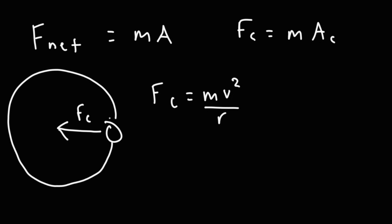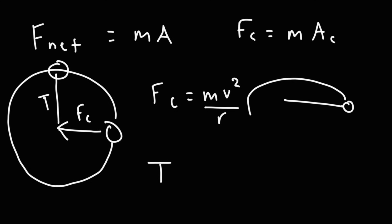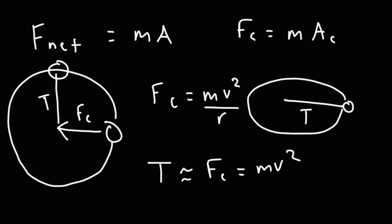Imagine you have a ball attached to a rope, and you're spinning it in a circle. That rope is going to have a tension force. If the circle is horizontal, the tension force is approximately equal to the centripetal force — it's mv squared over r. This is particularly true if the speed is high. The velocity is tangential in that direction.